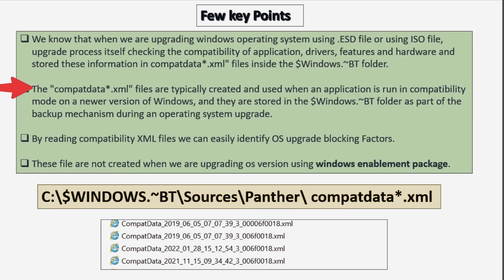The compatibilitydata.xml files are typically created and used when an application is run in compatibility mode on a newer version of Windows, and they are stored in the $Windows.~BT folder as part of the backup mechanism during an operating system upgrade.